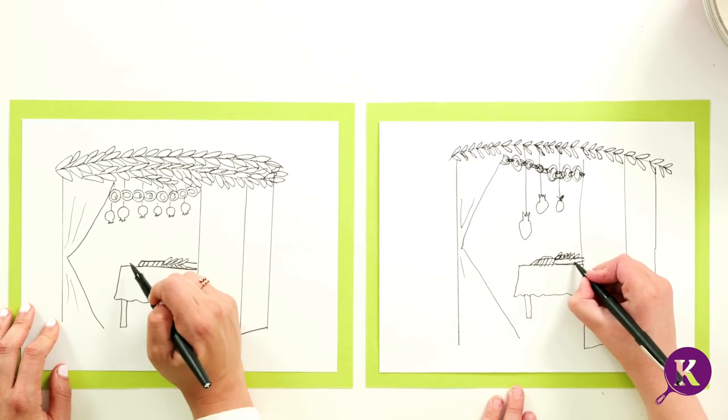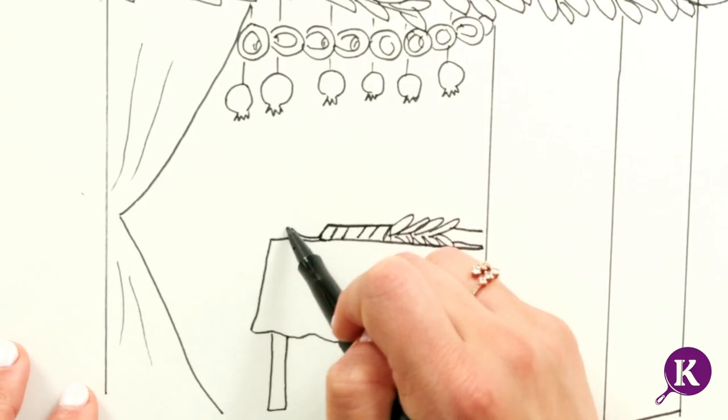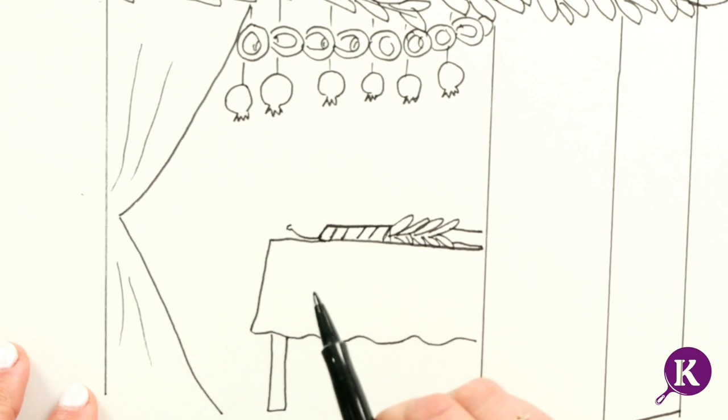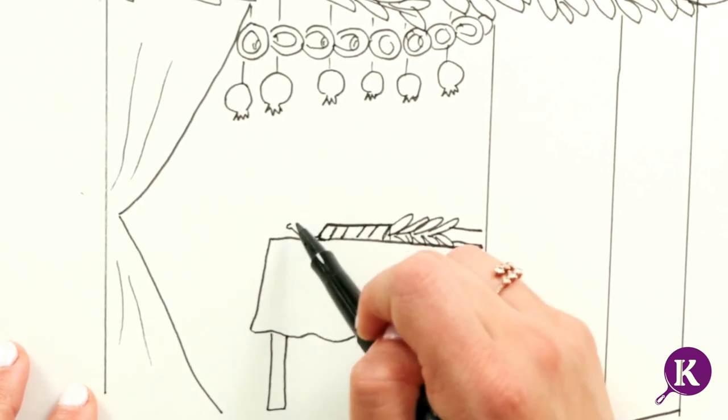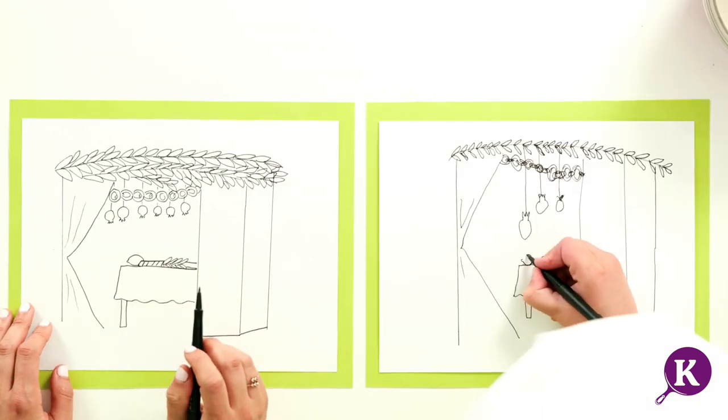And we cannot forget our beautiful, delicious, huge etrog. So I'm going to make a little smile, with a little pit and bump coming out. And a frown on top to finish off that etrog.